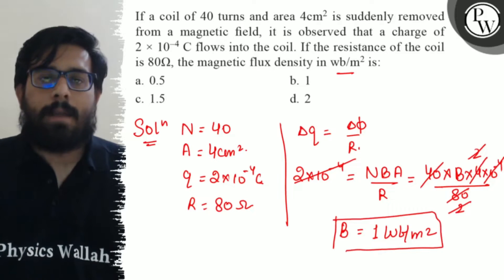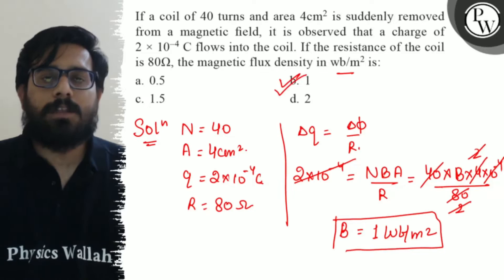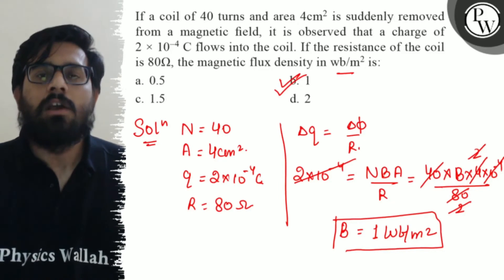Since the unit is weber per meter square, 1 weber per meter square is the value of magnetic flux density, which is your option B. So option B is absolutely right, and I hope you got the concept of this question. All the very best.